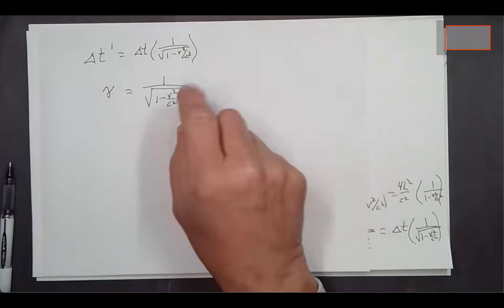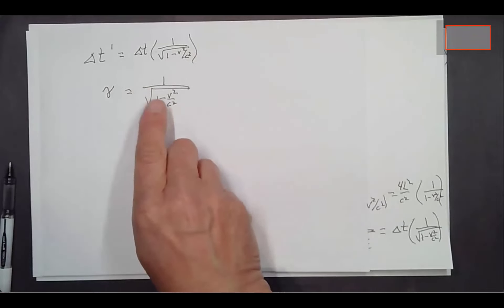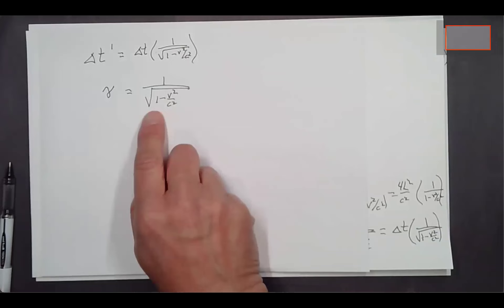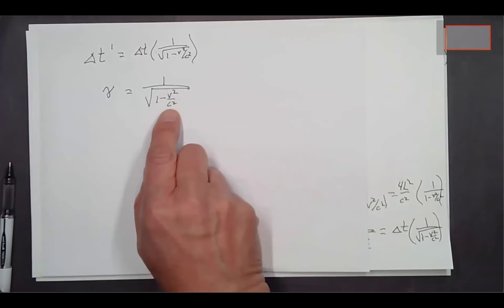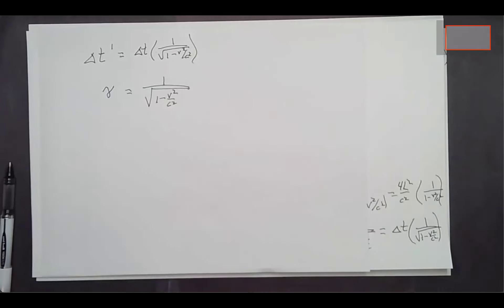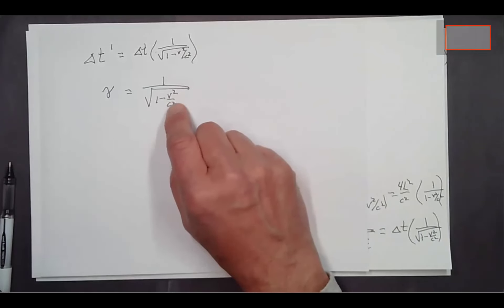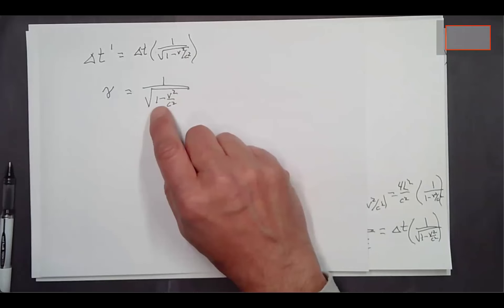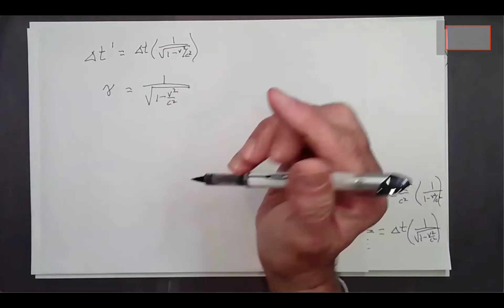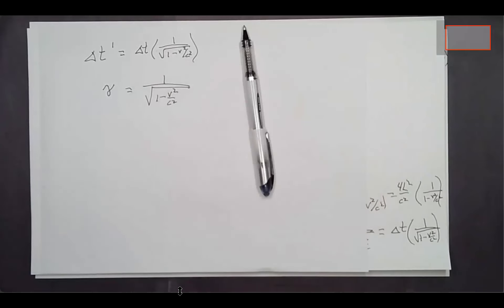Note that V cannot be greater than or equal to c. If V equals c, you'd have 1 minus 1 equals 0 in the denominator, which is undefined. If V is greater than c, you get a negative under the square root — an imaginary number — which causes problems. So objects cannot reach or exceed the speed of light.